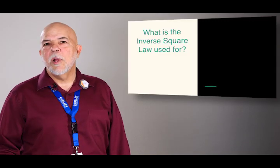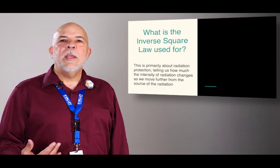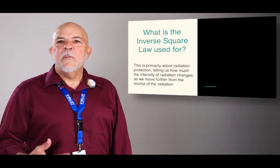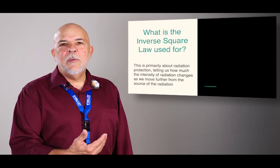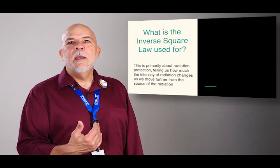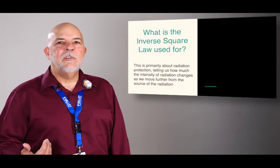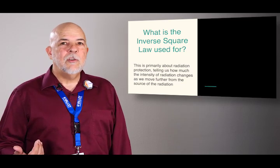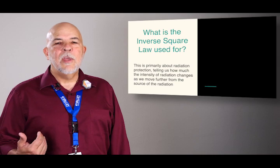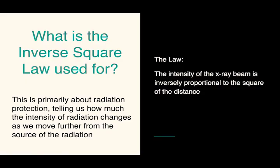So what is the inverse square law used for? Primarily, it's for radiation protection. For a technologist, if you're standing two feet from the x-ray tube during an exposure or you're standing six feet, it tells us exactly how much radiation reduction we're going to receive as a dose. So the law is the intensity of the x-ray beam is inversely proportional to the square of the distance. Really clear, right? So let's take a little bit of a better look at that.